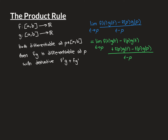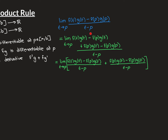Now why on earth would we do that? It's because we're going to be able to spot a very helpful result. Our next move is to split this complicated expression into two separate fractions. We get the limit as t approaches p of f(t)g(t) minus f(p)g(t) over t minus p, plus f(p)g(t) minus f(p)g(p) over t minus p. So all of this is still equivalent to the original expression.